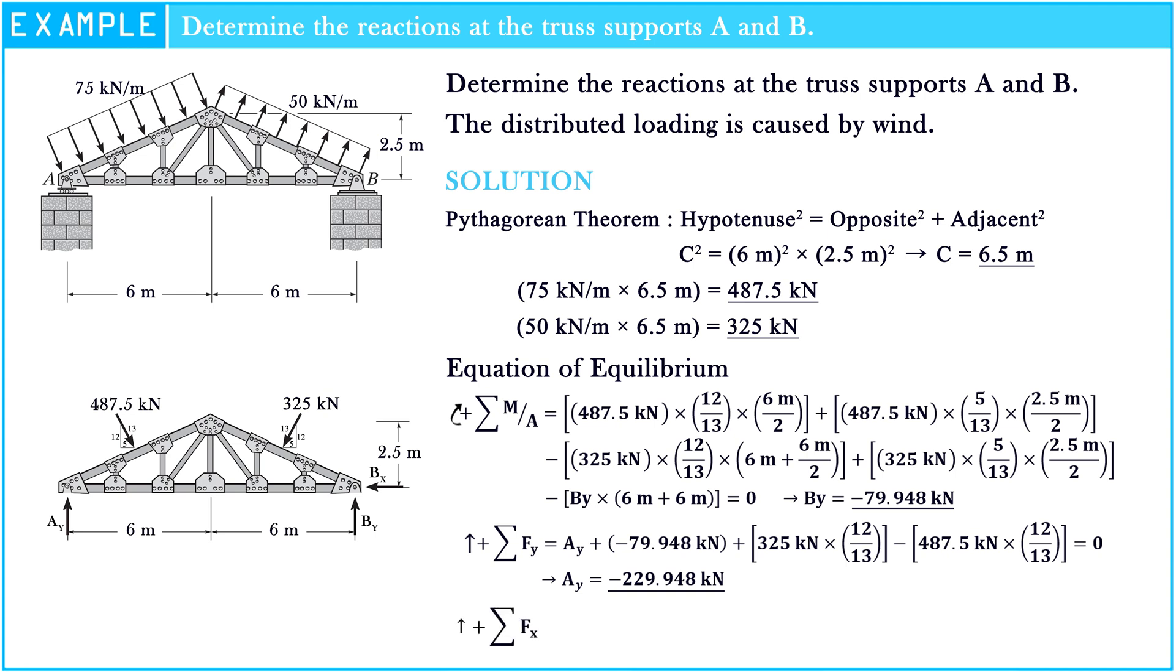The sigma of force along x-axis is equal to zero. Negative Bx plus 325 kN multiply by 5 over 13, plus 487.5 kN multiply by 5 over 13 is equal to zero. Hence, Bx is equal to 312.5 kN.